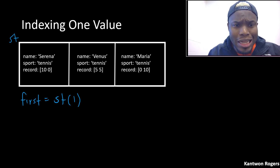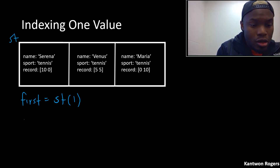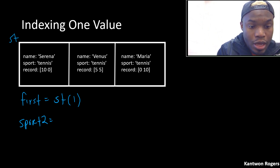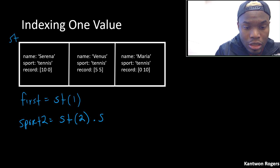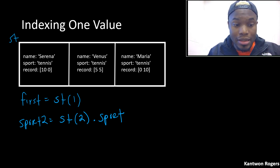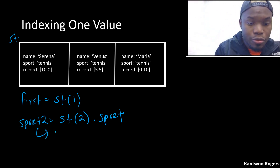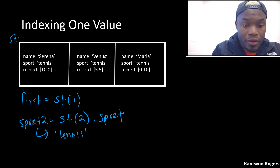Now let's say I wanted to get out my second person's sport — let's call it sport two. All I have to do is say my structure at the second position dot sport. It's always: the name of the structure, then parentheses with the index you want to access, then dot, then the field name you want to access. In this case, sport would be tennis. This returns class char, whereas the first example returns class struct — it's the entire first structure.